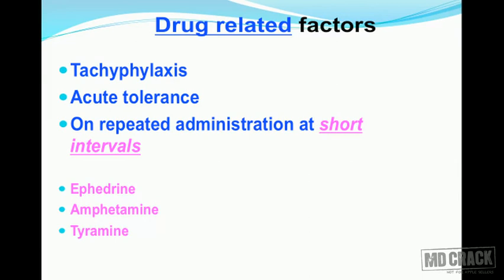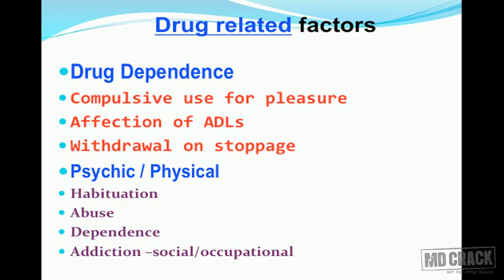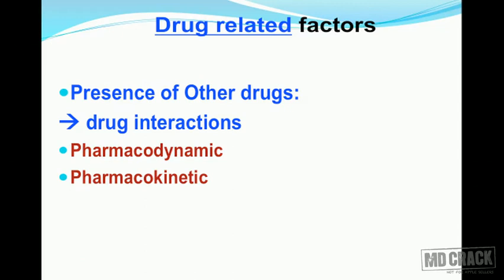Tachyphylaxis is acute tolerance — if a drug is given in repeated administrations at short time intervals, the response decreases. This happens with drugs like ephedrine, amphetamine, and tyramine. Drug dependence involves compulsive use for pleasure, affected activities of daily living, and withdrawal symptoms when the drug is stopped. The phases of drug dependence are: habituation (not too serious), then abuse, then dependence, and finally addiction, which has more social and occupational domains.